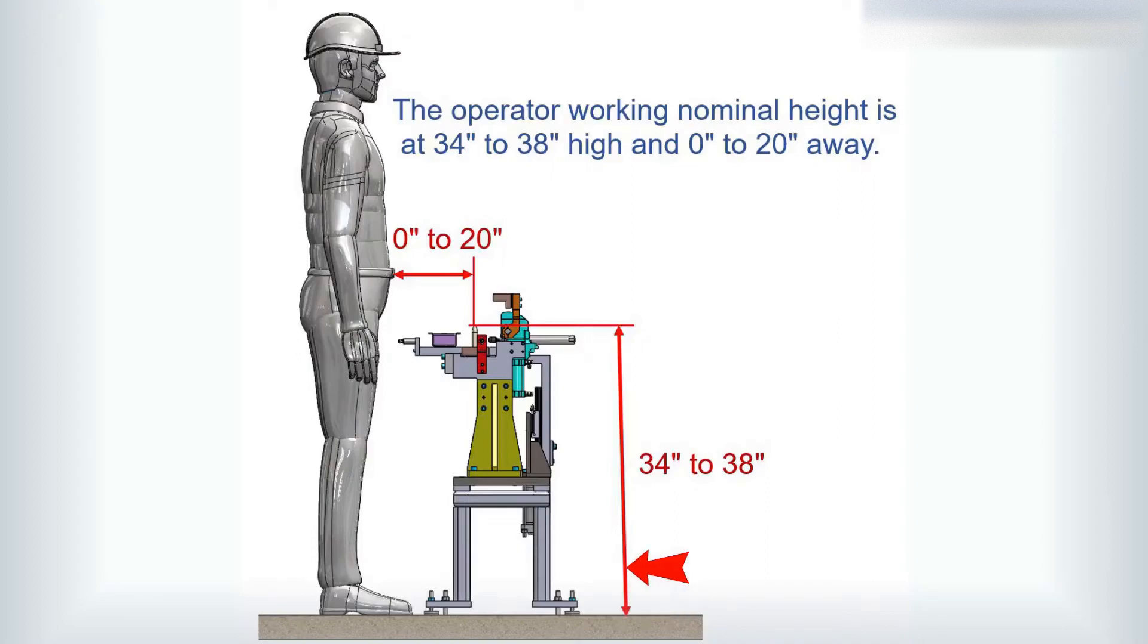And secondly, distance from the operator to the part loading area. The operator working nominal height is at 34 inches to 38 inches high, and 0 inches to 20 inches away.